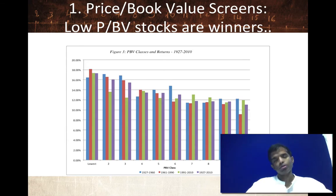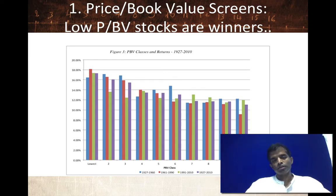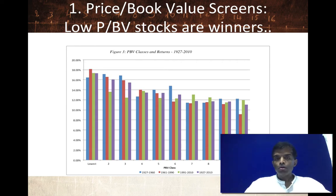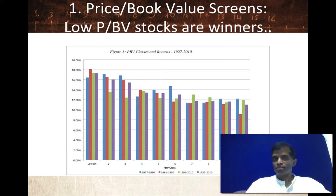Let's start with price-to-book ratios. The intuition goes back to what you think about accounting. If you trust accountants to some extent, then book value actually means something. There are people who argue that book value is a good proxy for liquidation value — that if you liquidate a company today, what you see on the books is basically what you get. If you buy into that notion, buying a stock with a low price-to-book ratio, especially if the price is less than book value, makes a lot of sense.